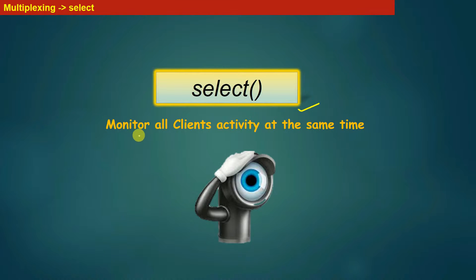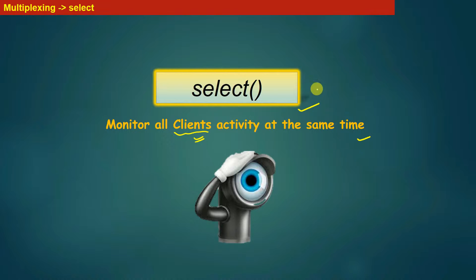The select system call helps us to monitor all clients' activity at the same time. These are the clients connected to our server, and using the select system call, our server can monitor all those clients simultaneously — which client has sent data, which has not, and which has sent a new connection initiation request.